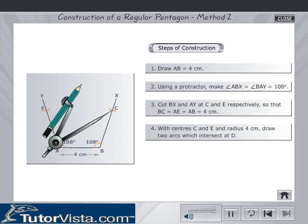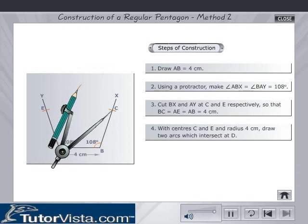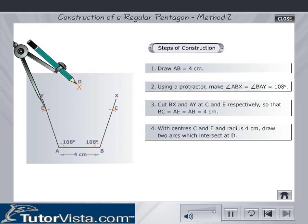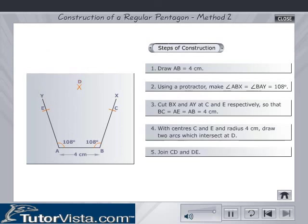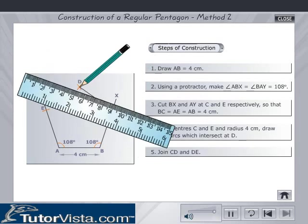With centers C and E and radius 4 cm, draw two arcs, which intersect at D. Join CD and DE.